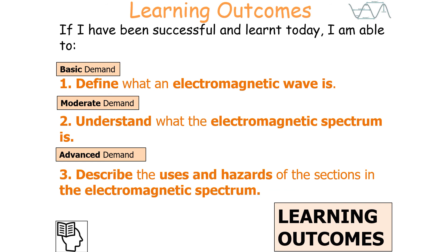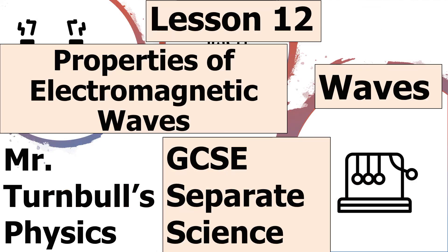If we've been successful in today's lesson, we should be able to understand what electromagnetic waves are, understand the different parts of the electromagnetic spectrum, and describe the uses and hazards of the electromagnetic spectrum. I hope you've enjoyed today's lesson looking at the properties of electromagnetic waves in GCSE separate science physics. Thank you very much and have a lovely day.